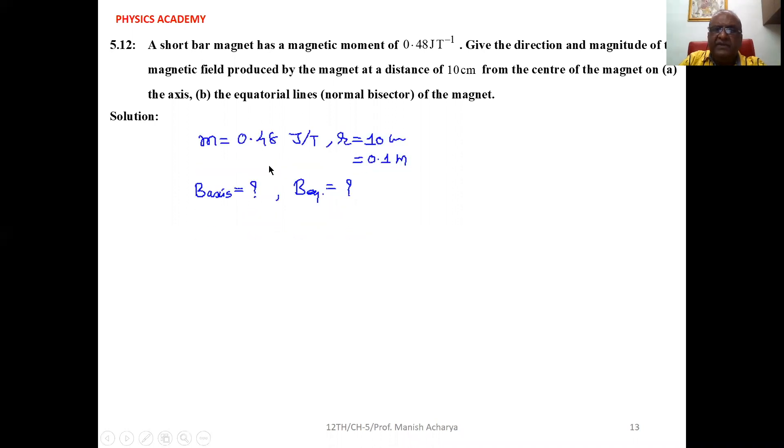The magnetic moment given is 0.48 joule per tesla, and the point is at a distance R equal to 10 cm, which means 0.1 m, where we want to find the magnetic field. First, we have to calculate the magnetic field at a point on the equator as well as at a point on the axis of the dipole moment.